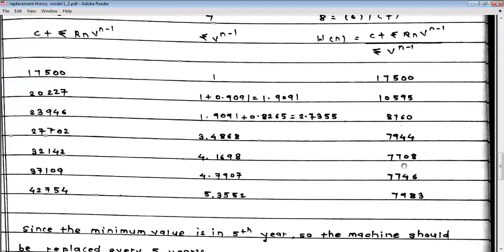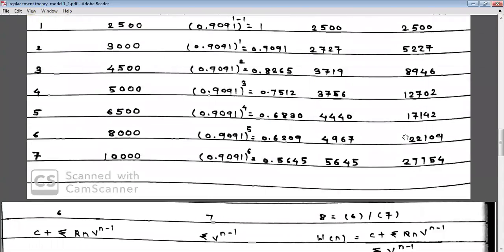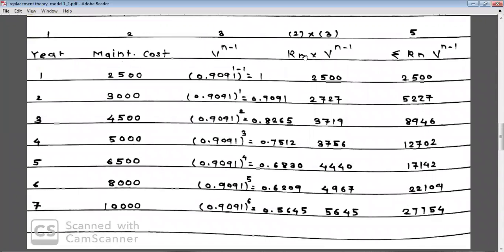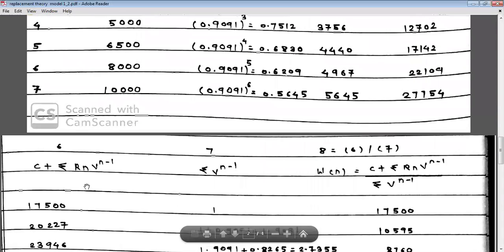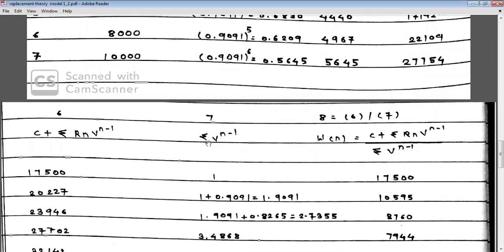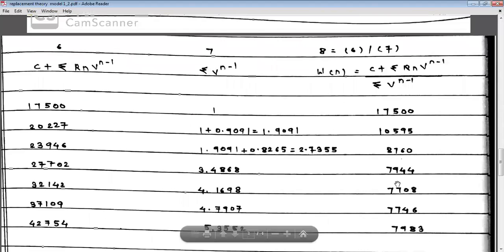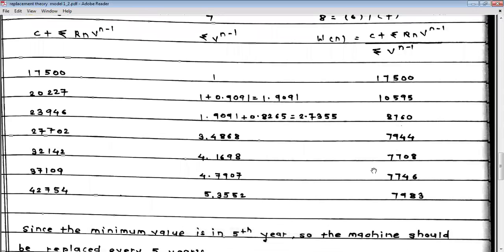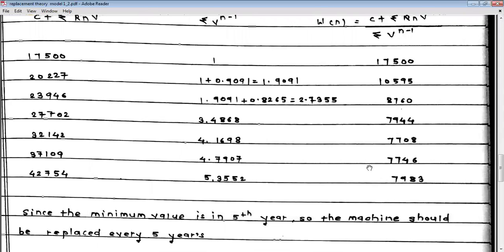Since the minimum weighted average cost is in the fifth year, the replacement should be done after every fifth year. To summarize the steps: calculate V^(N-1); multiply by Rn; find cumulative sums; add C; find cumulative sum of V^(N-1); divide Column 6 by Column 7; and identify the minimum value — which here is in year 5.